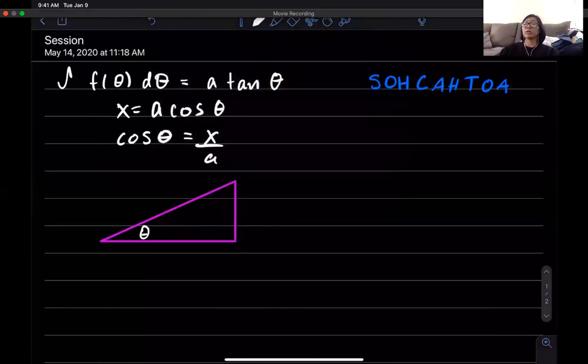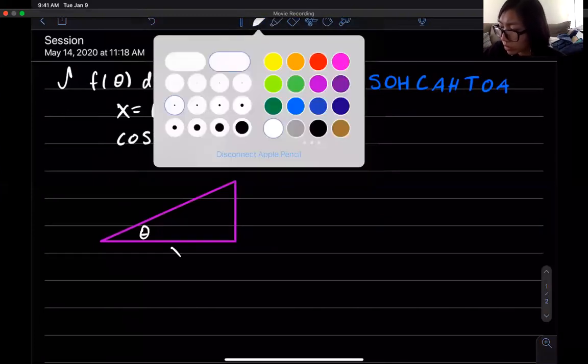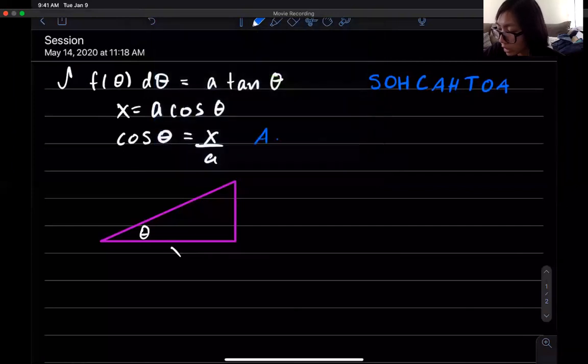Right and so if this angle here is theta SOHCAHTOA tells me that the cosine of theta is going to be the adjacent angle over the hypotenuse. So for this triangle the adjacent side is right here so it's going to be adjacent over the hypotenuse.